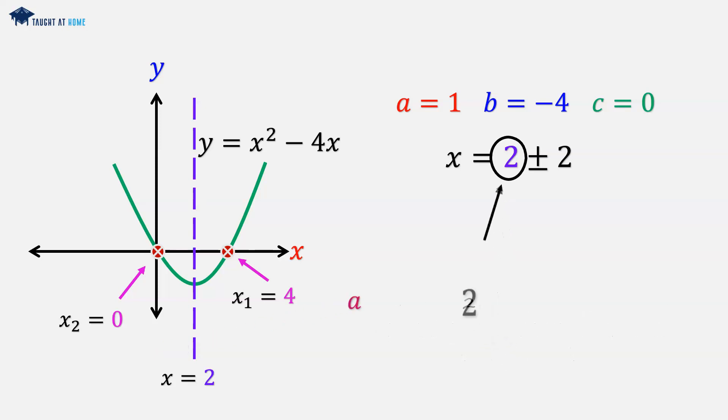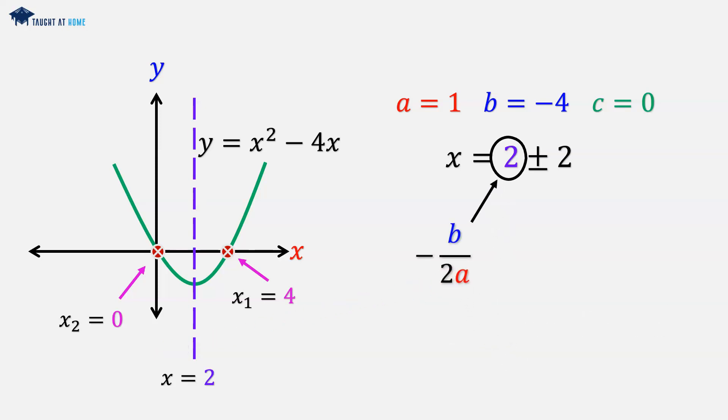And this is given by minus b all over 2a. And we can just check this again. So b is minus 4, 2a is 2 times 1 which is 2. Minus minus 4, well that's positive 4 over 2, which is 2.